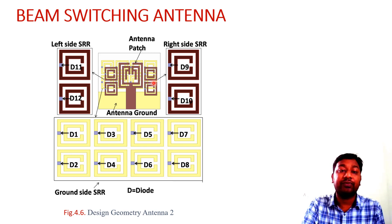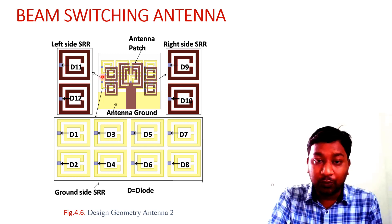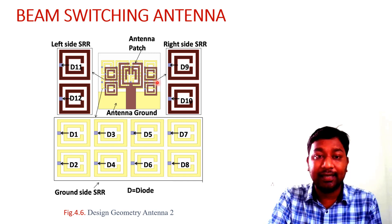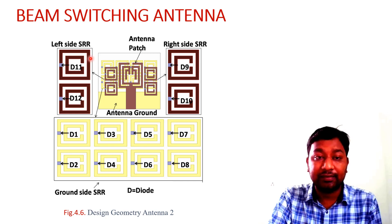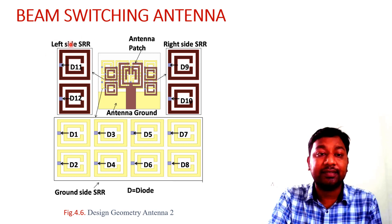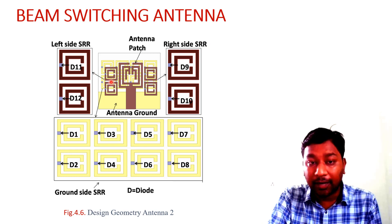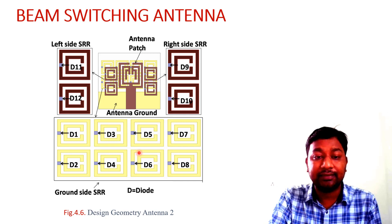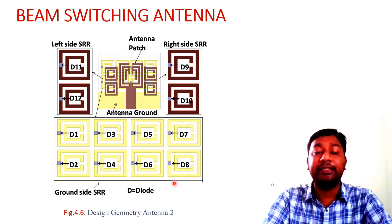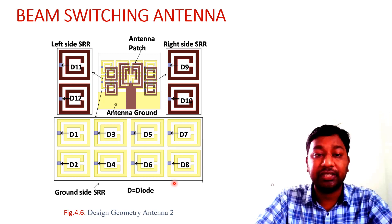We incorporated the metamaterial structure into our antenna design by attaching four unit cells in the patch layer and eight unit cells in the bottom layer. In the image, the left side SRR and right side SRR are visible. We label them D11, D12 and D9, D10 for the upper and lower portions. That is the design geometry of the beam switching antenna.